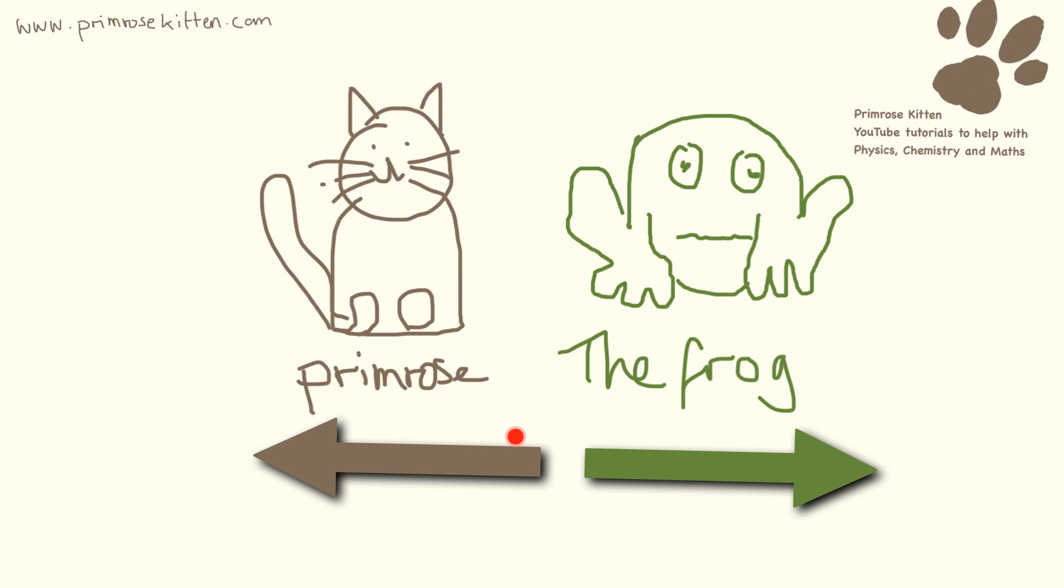So here I have Primrose in brown, and she's going to be demonstrated by a brown arrow going this way. And our froggy in green, who's demonstrated as a green arrow going this way. Now, these are pulling forces. They're pulling against each other. Primrose wants the frog to go this way and the frog wants to go this way.